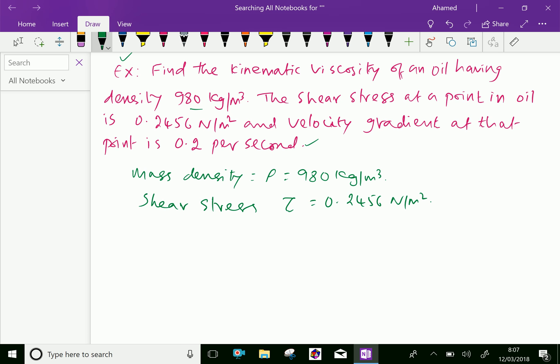The velocity gradient, that is du over dy, which equals 0.2 per second.